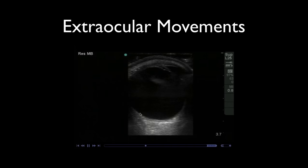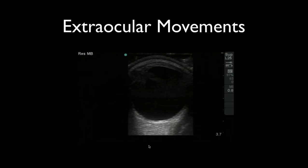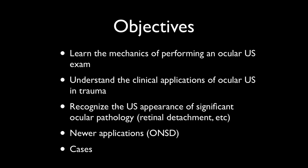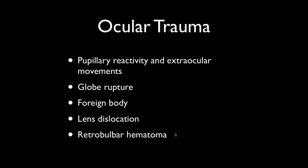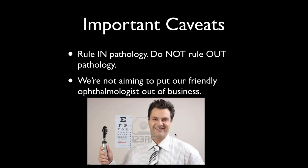Now let's move on to abnormals, starting with ocular ultrasound in trauma patients. You can use it to assess pupil reactivity, extraocular movements, globe rupture, foreign body, lens dislocation, and retrobulbar hematoma. An important caveat: bedside point-of-care ultrasound is trying to rule in pathology, not rule out it. These bedside studies should not preclude consulting ophthalmology. I use bedside ultrasound to better inform my consult and help triage how urgently the patient needs to be seen.